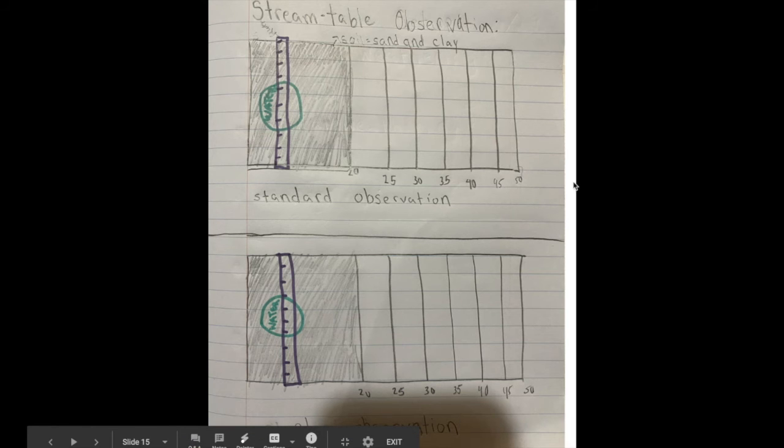Now, this is page 15, where we drew a setup where we are going to record our stream table observations. Next week, we will start our stream table observations for slope with our experiment. Make sure this diagram is added on page 15 so that you are ready for next week.